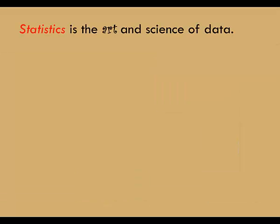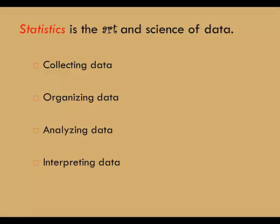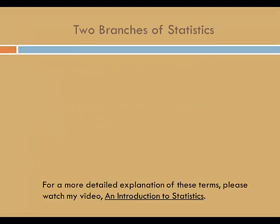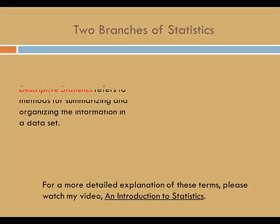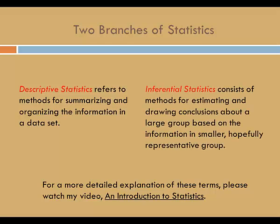Statistics is the art and science of data. It includes collecting data, organizing data, analyzing data, and interpreting data. The field of statistics is divided into two branches: Descriptive Statistics and Inferential Statistics. Descriptive Statistics refers to methods for summarizing and organizing the information in a data set, while Inferential Statistics consist of methods for estimating and drawing conclusions about a large group based on the information in a smaller, hopefully representative group. For a more detailed explanation of these terms, please watch my video, An Introduction to Statistics.